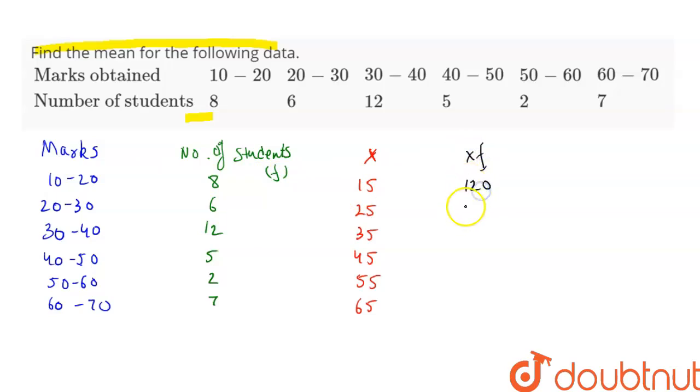Then we have 35 into 12, that is 420. Then we have 45 into 5, that is 225. Then we have 55 into 2, that is 110.